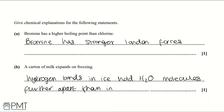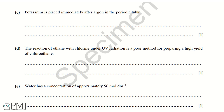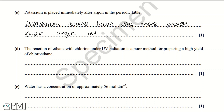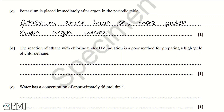Part C: potassium is placed immediately after argon in the periodic table. The reason is that potassium atoms have one more proton than argon atoms — it's important to say 'atoms'. To get the mark you must state that phrase exactly, as the periodic table is ordered by increasing atomic number.